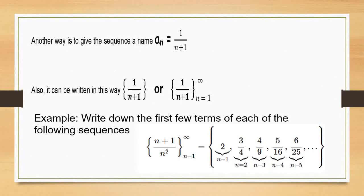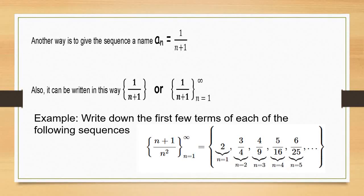For example: write down the first few terms of each of the following sequences. If the general formula is given and n equals 1, the first term will be 2, the second term will be 3/4, and the third term will be 4/9.